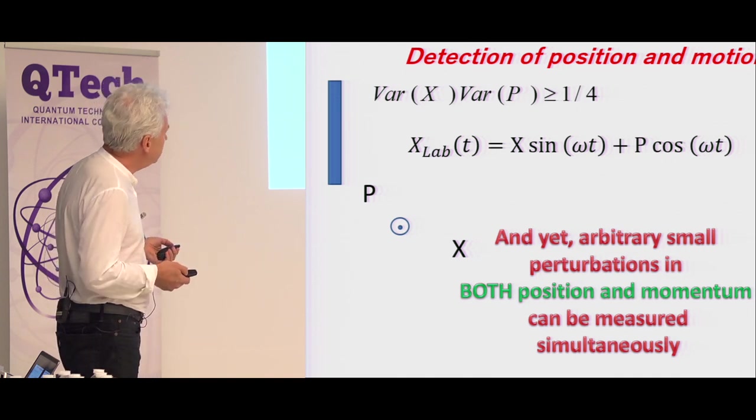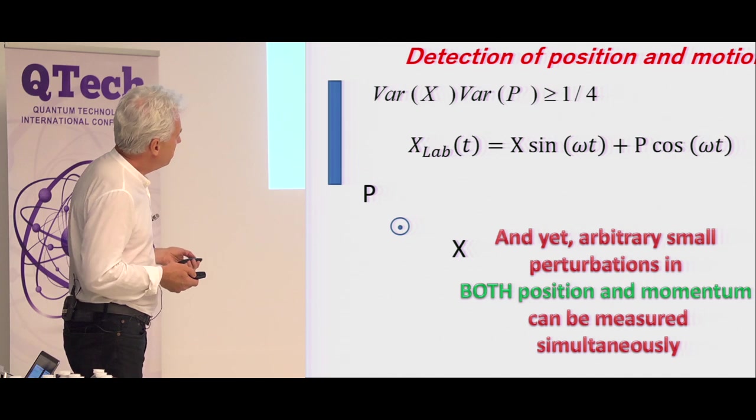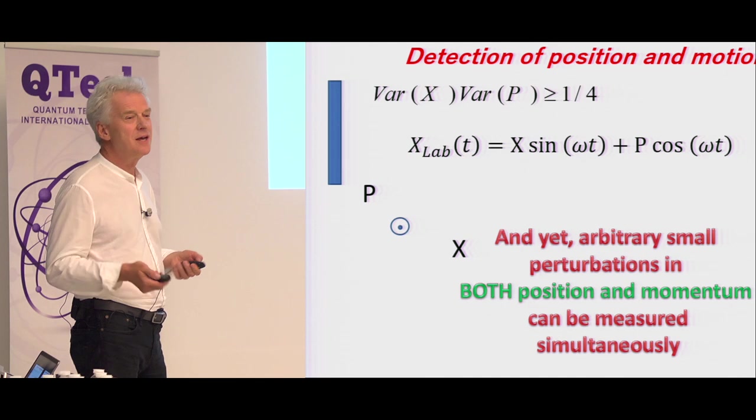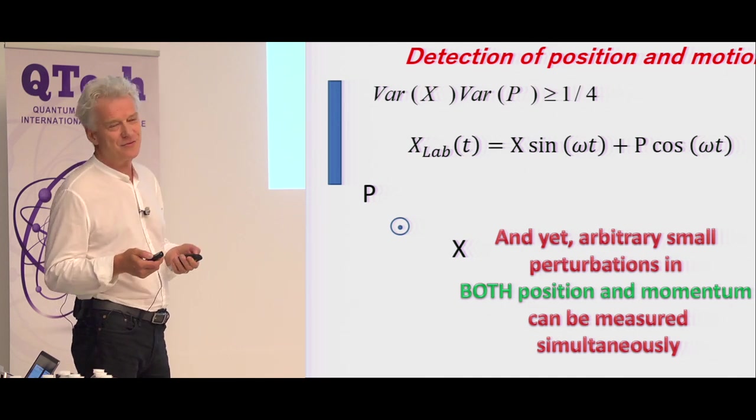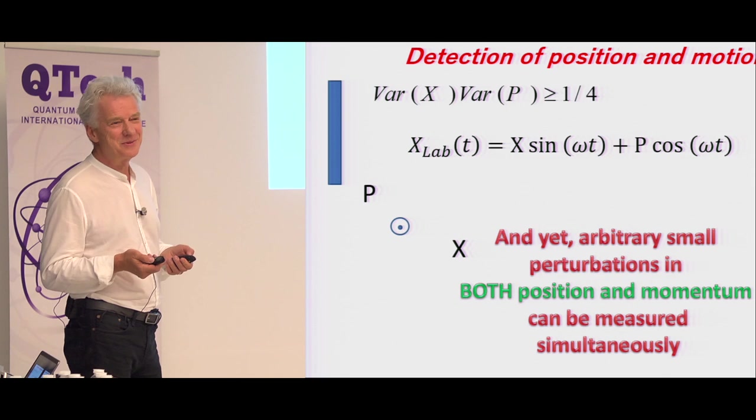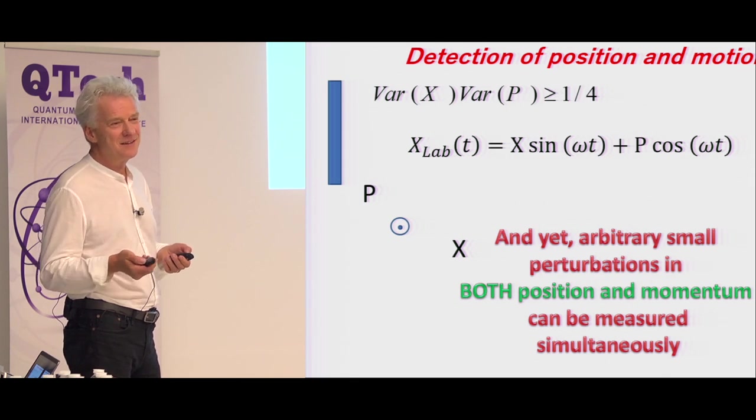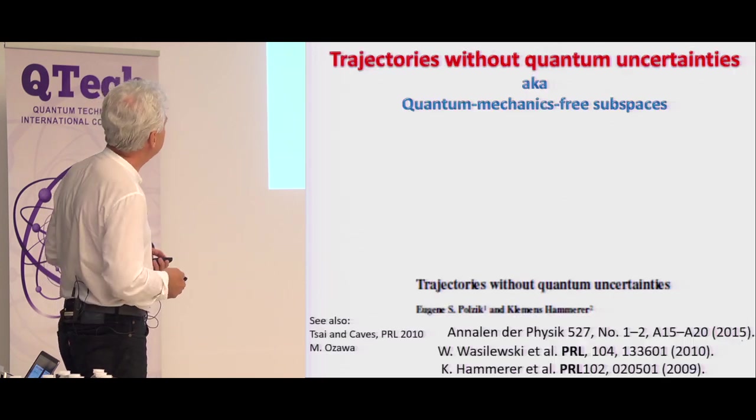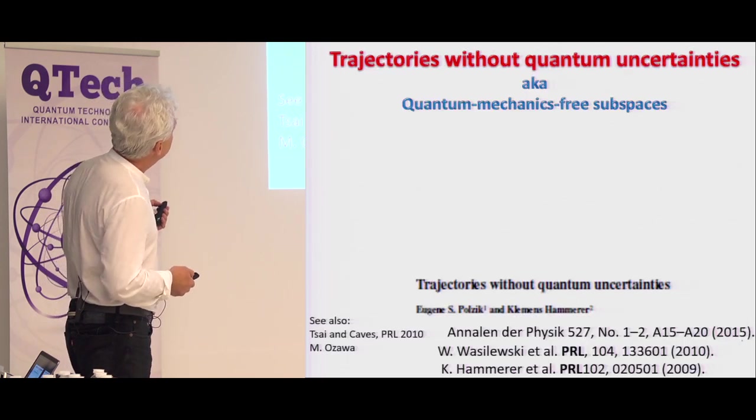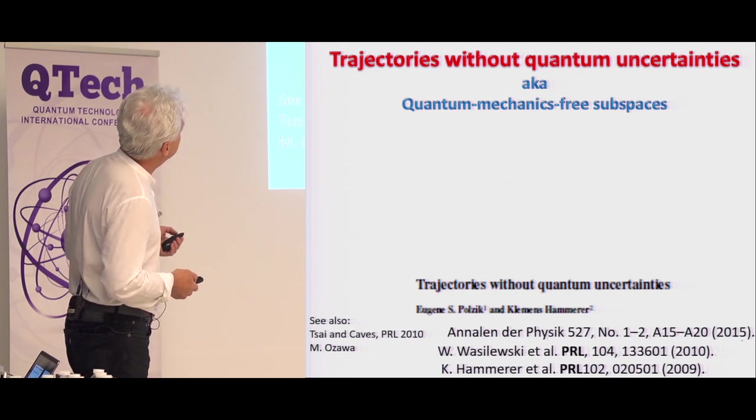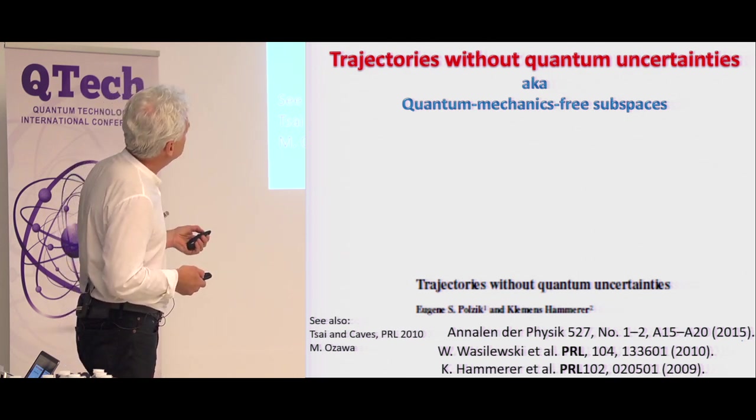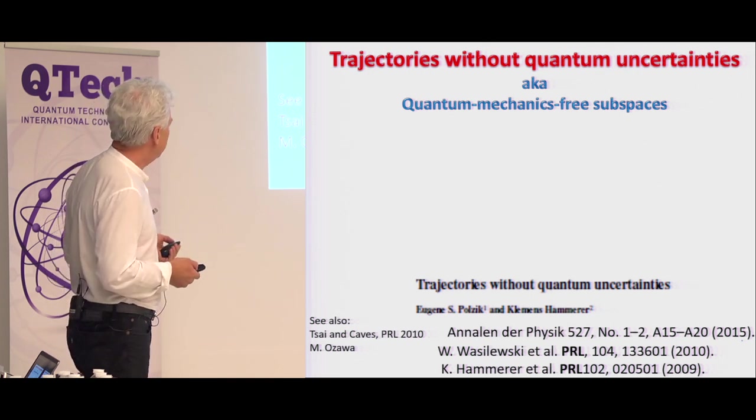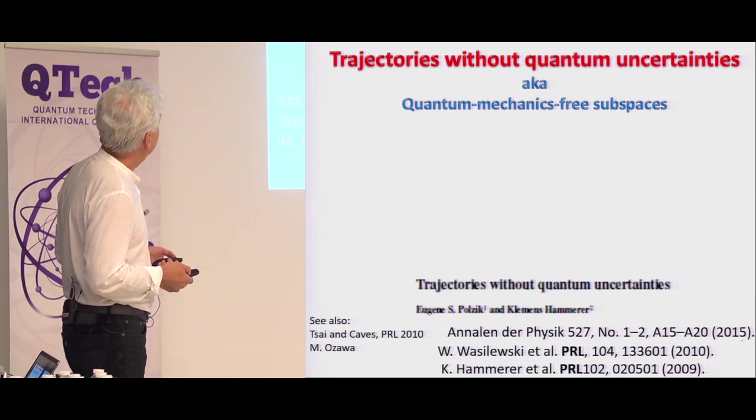This is why you have the standard quantum limits of measurement. So what I want to tell you today about is that indeed, both position and momentum can be measured within principle arbitrary accuracy if you choose the right reference frame. It will be a very different story of reference frames.